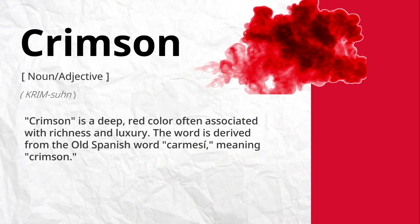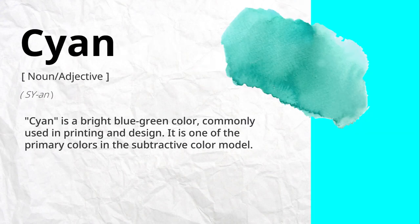Crimson is a deep red color often associated with richness and luxury. The word is derived from the Old Spanish word carmes, meaning crimson. Cyan is a bright blue-green color commonly used in printing and design. It is one of the primary colors in the subtractive color model.